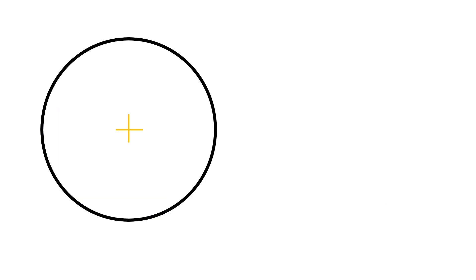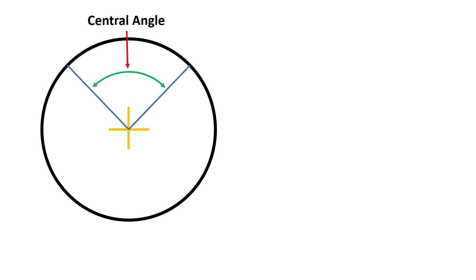A central angle is an angle where the vertex is at the center of a circle and its sides are radii. These two radii create an angle here. This angle is at the center of the circle, so this is a central angle.